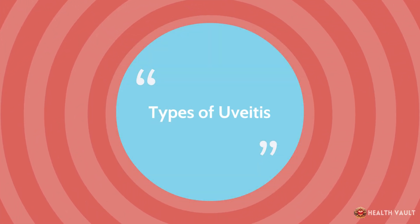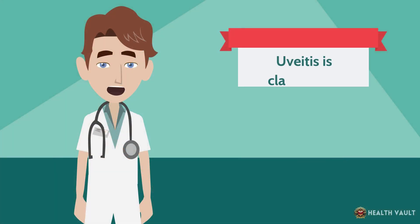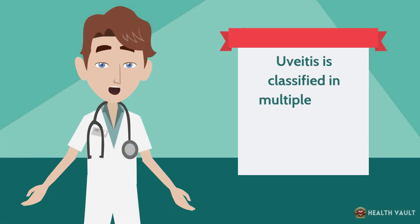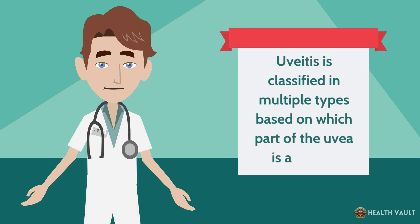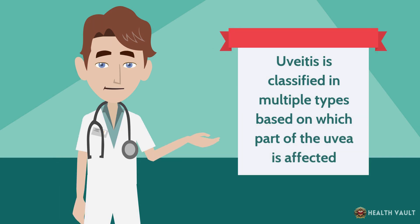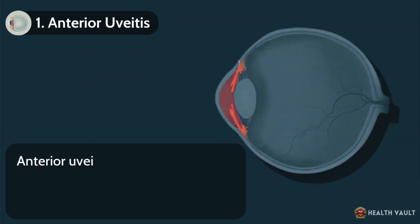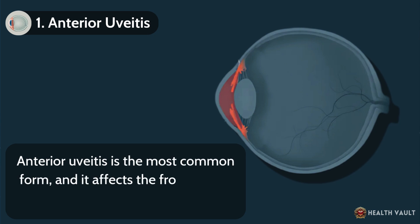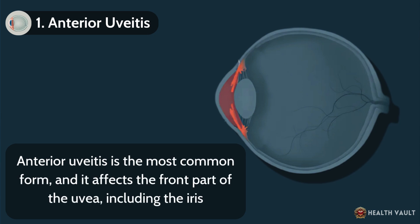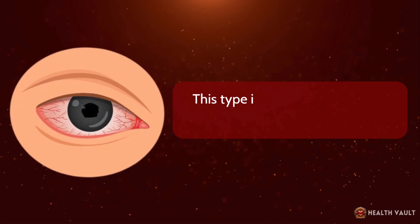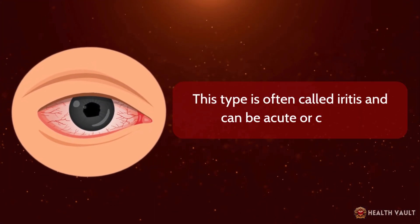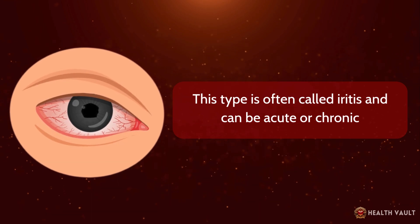Types of uveitis. Uveitis is classified into multiple types based on which part of the uvea is affected. Anterior uveitis is the most common form, and it affects the front part of the uvea, including the iris. This type is often called iritis and can be acute or chronic.